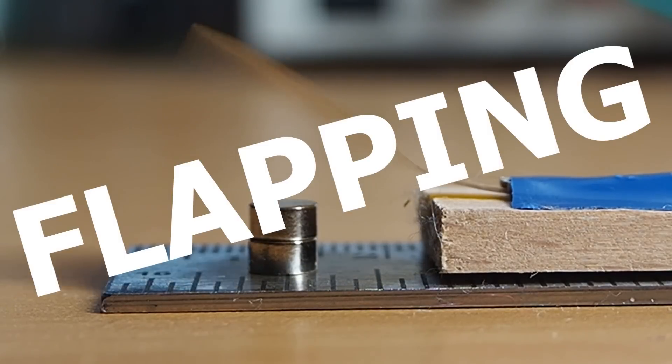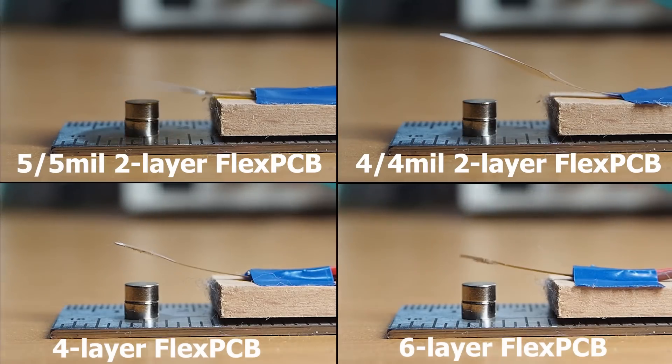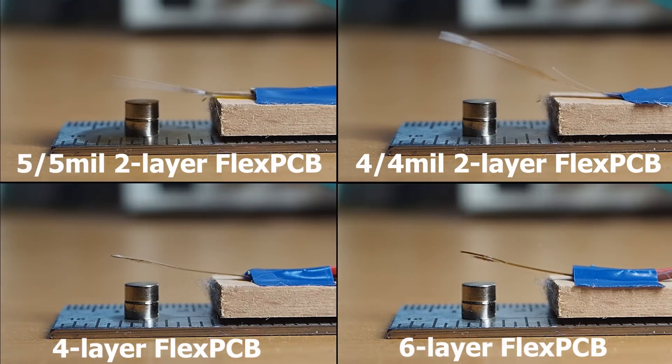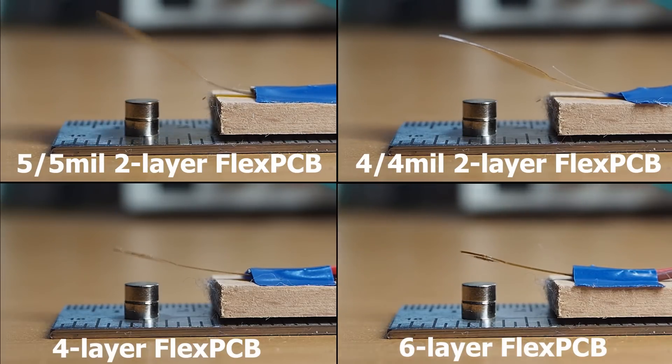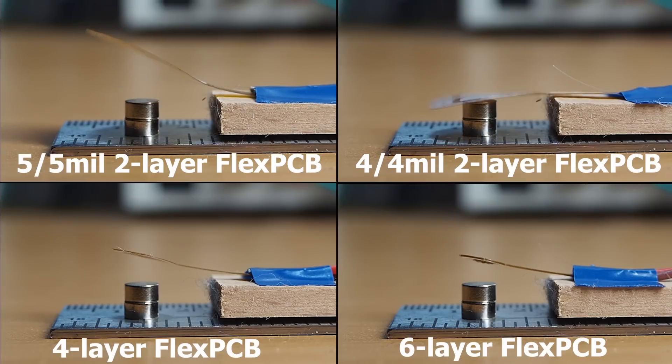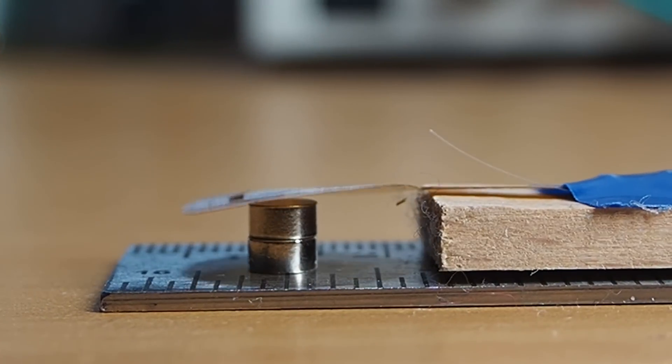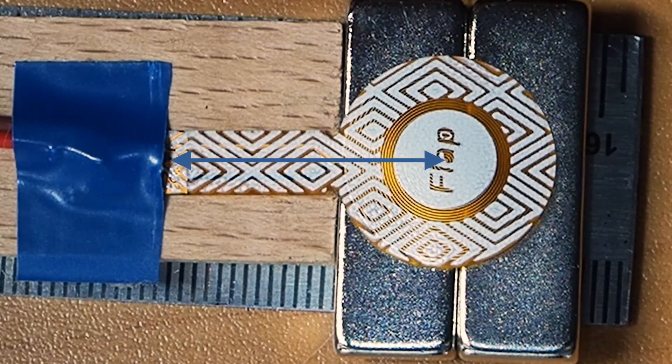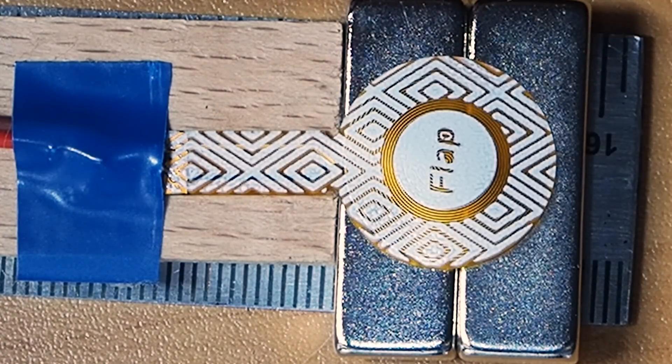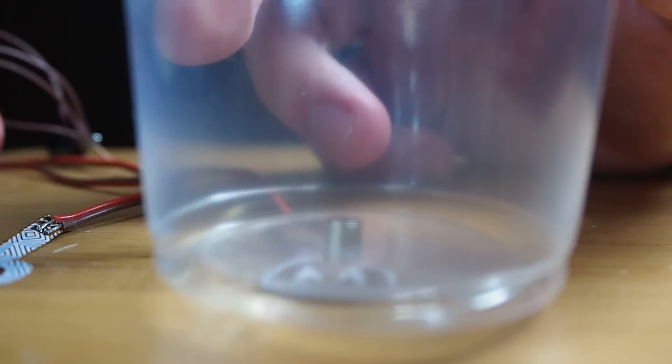Now let's talk about flapping. As shown here the extra thickness of the 4 and 6 layer PCBs reduce the flappiness of my flappy actuators. This all have to do with the stiffness, but remember that this flappy behavior also depends on other parameters like the magnetic field strength of the magnet, the perpendicular distance, and also the width.